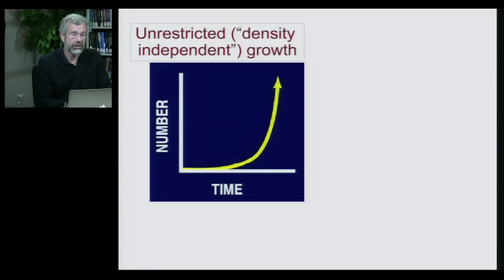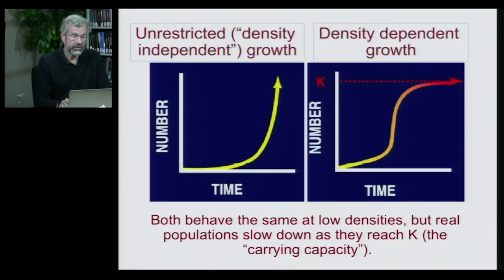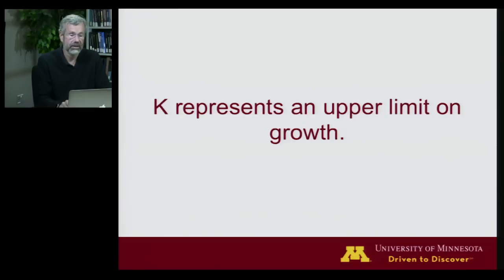Our initial view of population growth was that it was unrestricted — nothing to limit it, therefore density independent — giving that exponential curve going infinitely up. But in reality, we see that populations have a clear limit. A population grows rapidly at first, but as it approaches a value called K, population growth slows down and then halts altogether. K is referred to as the carrying capacity. At low densities the population grows quite rapidly, essentially exponentially, but in real populations, as they approach the carrying capacity, growth rate slows down and reaches a halt. K is very important because every organism on Earth has some upper limit on its population's growth.